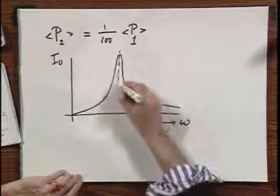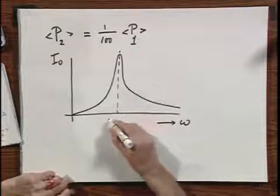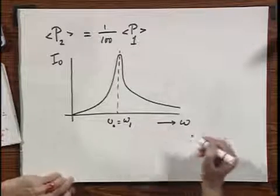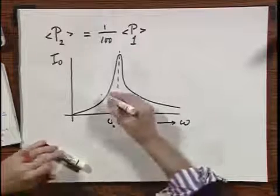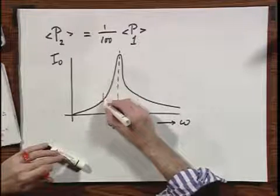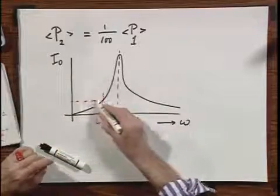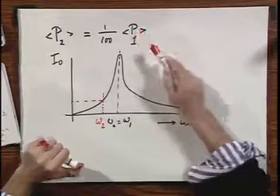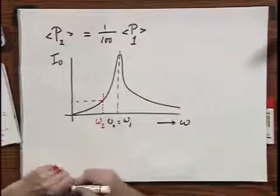And right here at the maximum value for I0 which is the resonance frequency, omega 0 equals omega 1 because that's the way I have tuned the system. And now my second frequency comes in here and so you see that the current is highly reduced. Reduced to the point that the power is only one hundredths that the resistor receives from station number 1.